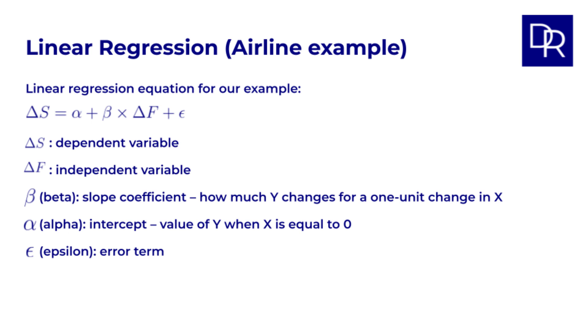So our regression becomes delta s equals alpha plus beta times delta f plus epsilon. So here, delta s is our y and delta f is our x. Now, when we run a linear regression using historical data of jet fuel spot price changes and crude oil futures price changes, the beta coefficient that we get from the regression is actually our minimum variance hedge ratio. Linear regression works by finding the line that minimizes the sum of squared errors. Essentially, it's minimizing the variance of the errors around the line. In hedging terms, minimizing the error in our regression is directly related to minimizing the variance of our hedged position, and therefore minimizing basis risk.